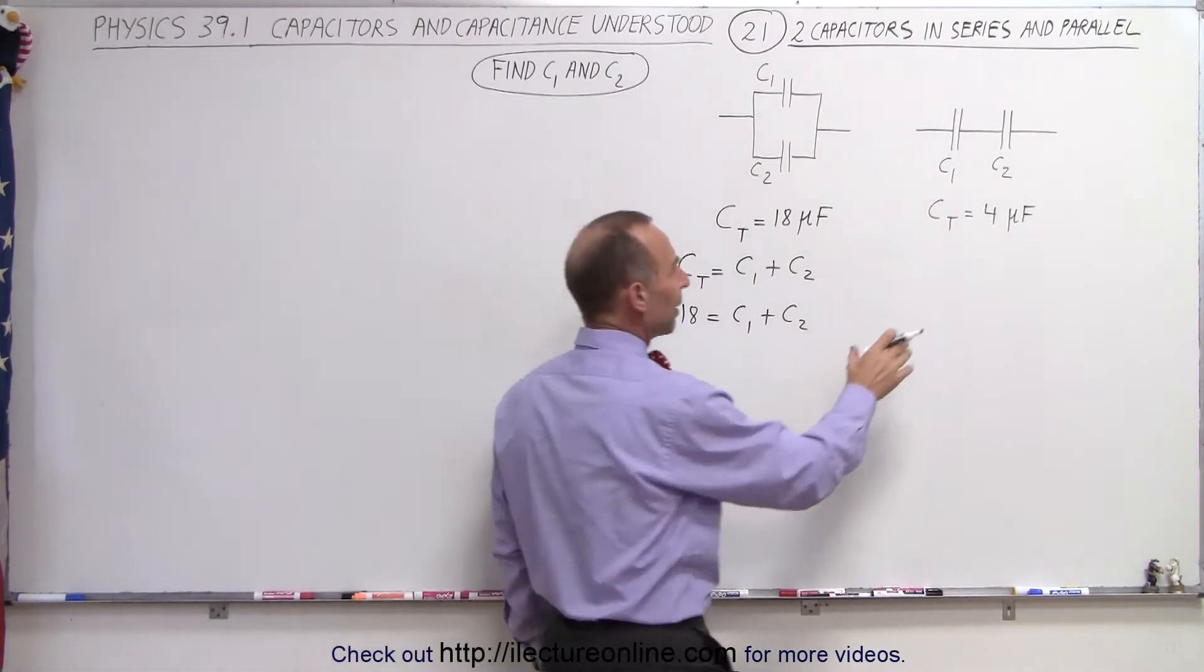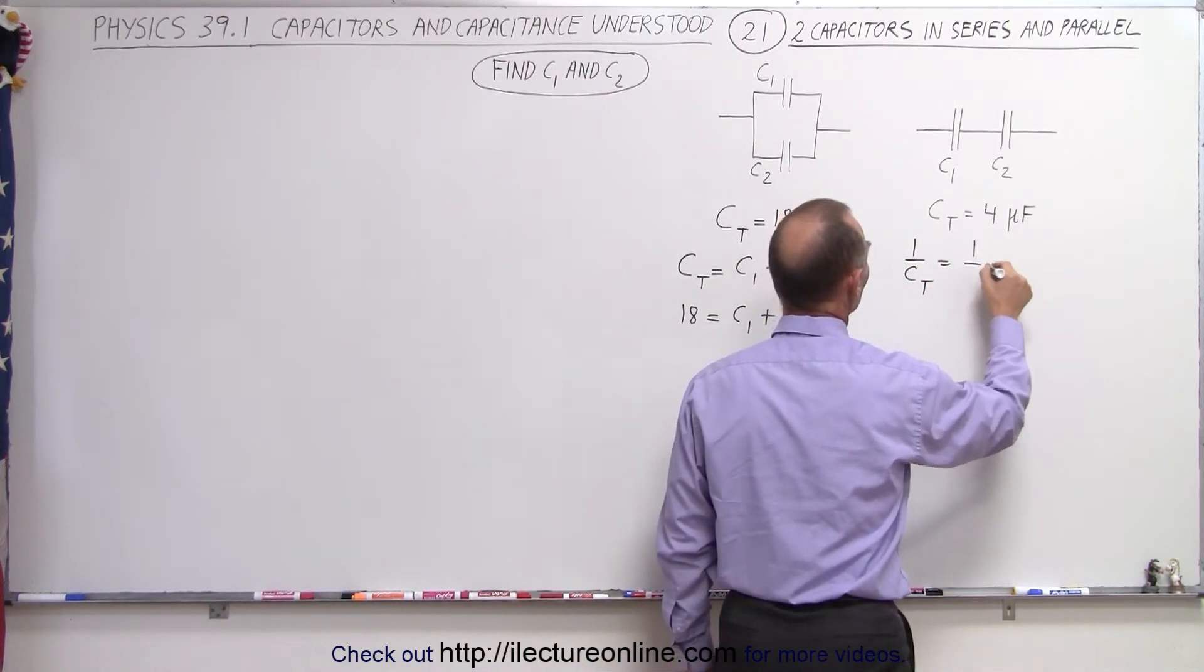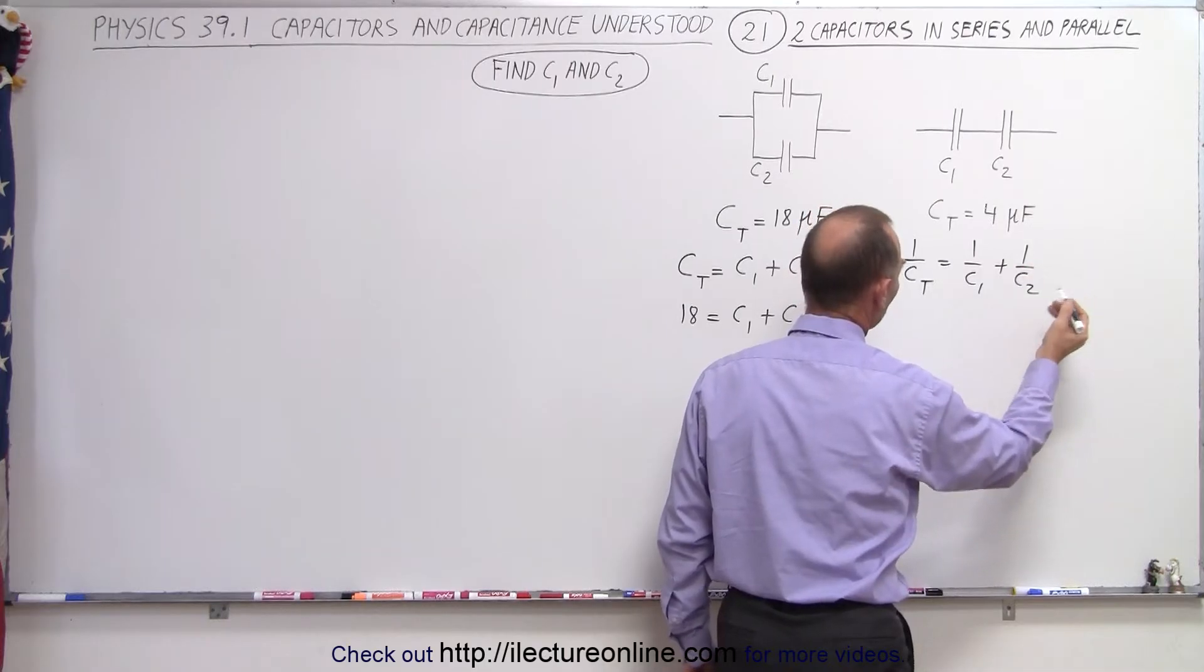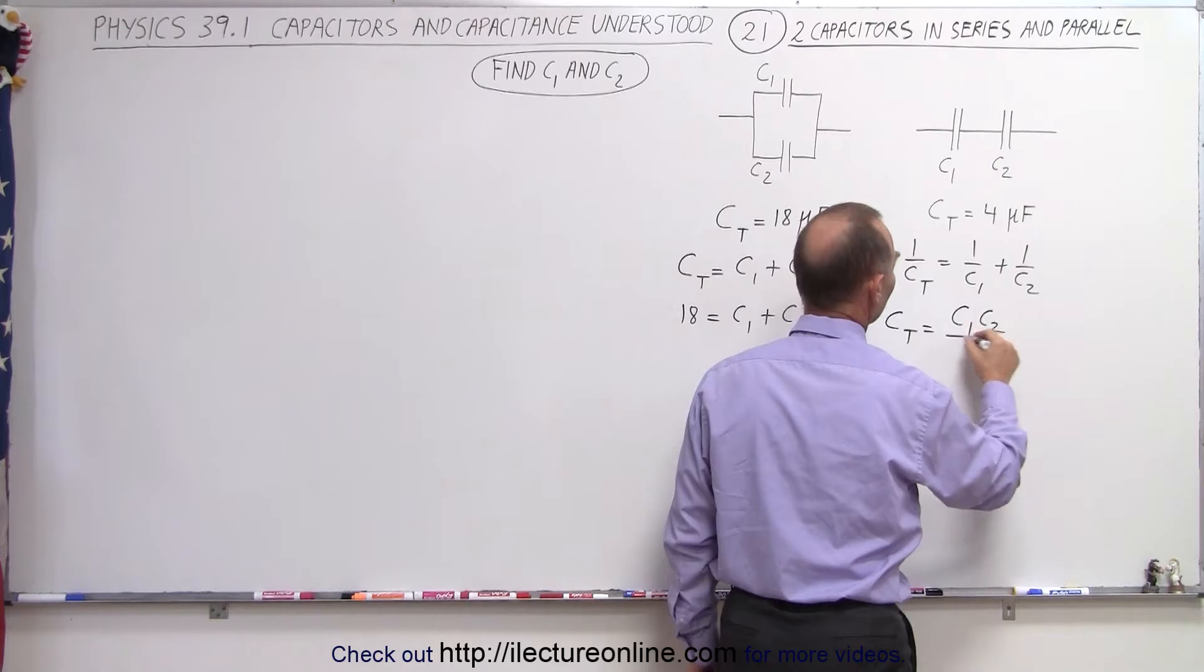In the case of them being in parallel, we can say that 1 over C total is equal to 1 over C1 plus 1 over C2, or we can write that C total is equal to the product divided by the sum.